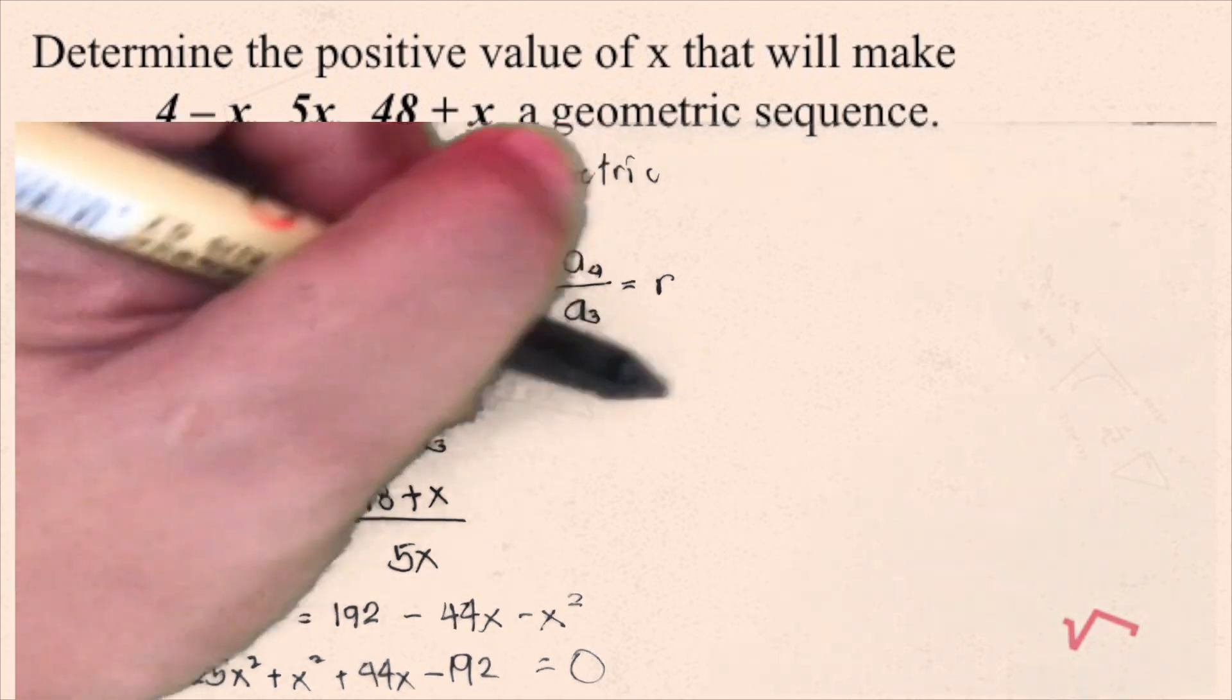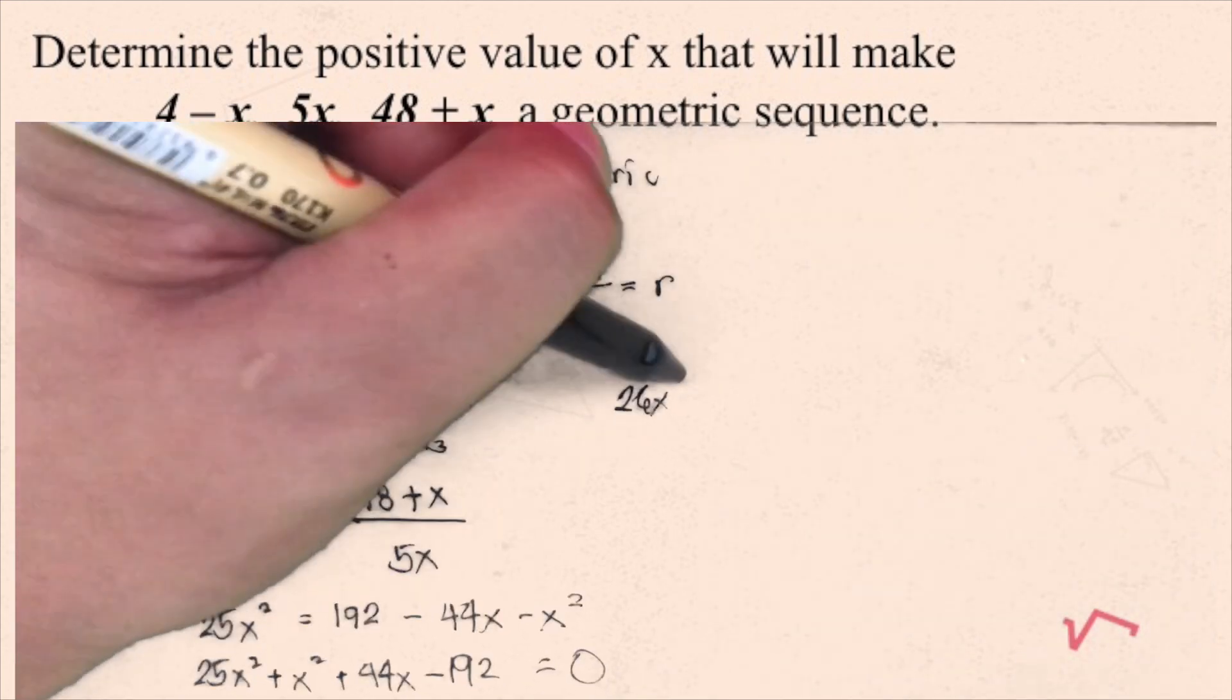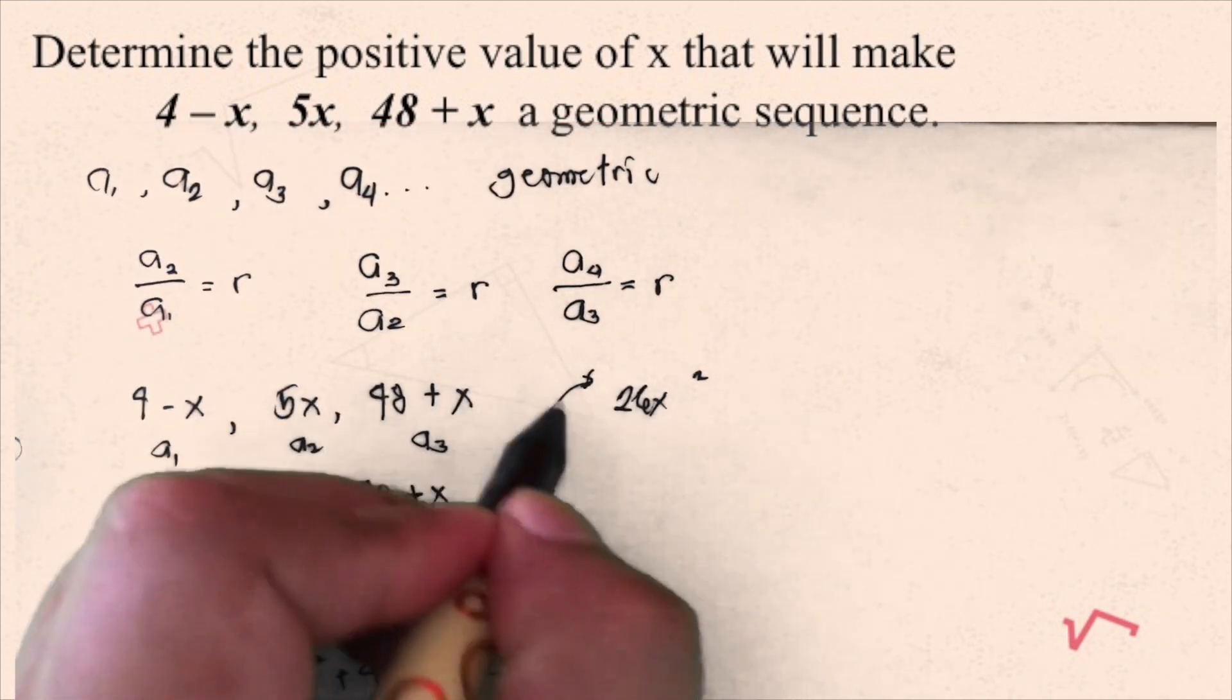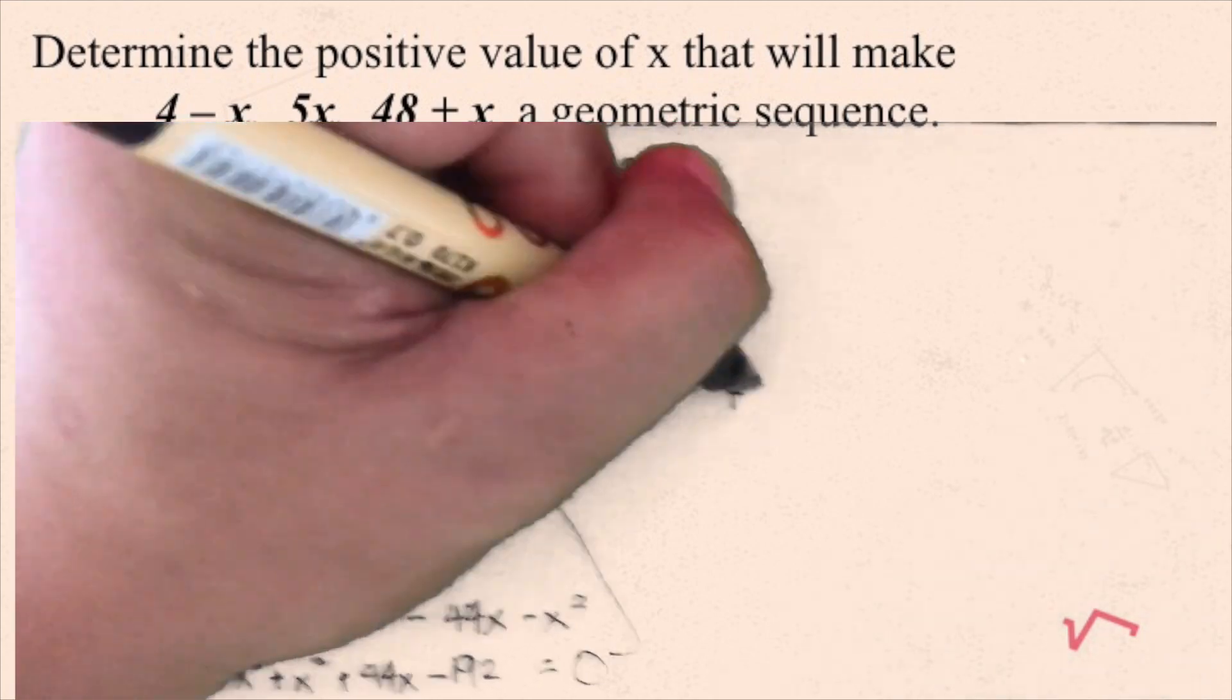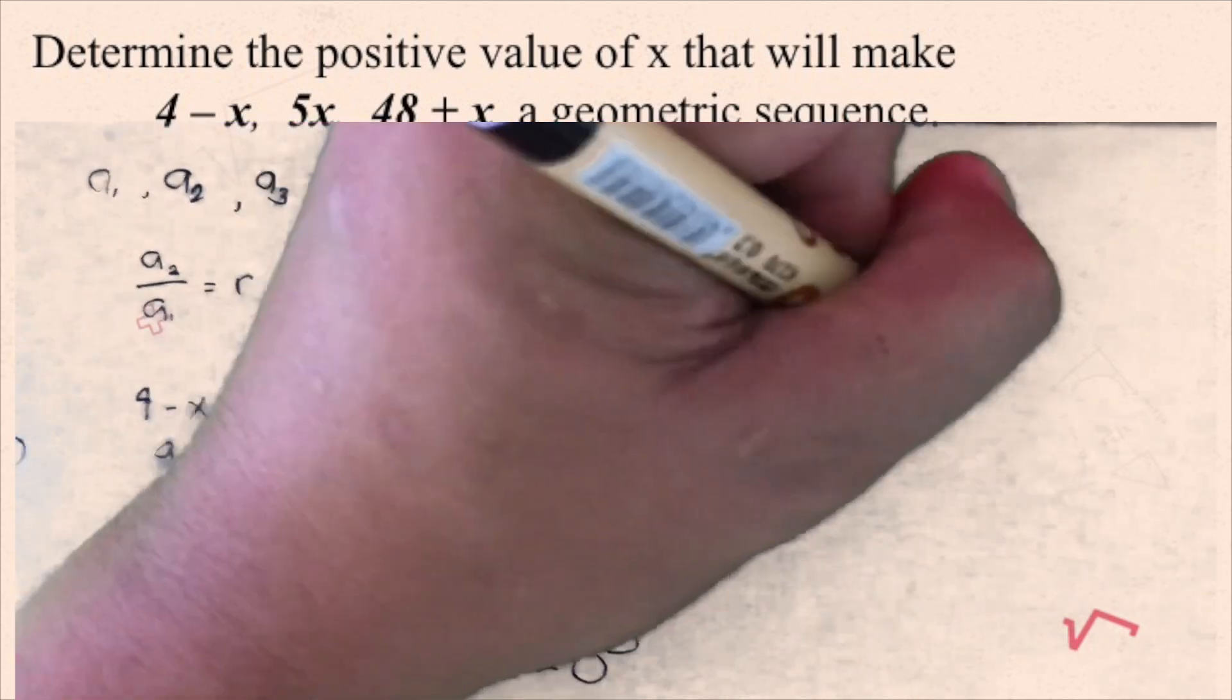So, this will be 26x squared, then, plus 44x minus 192 equals 0.